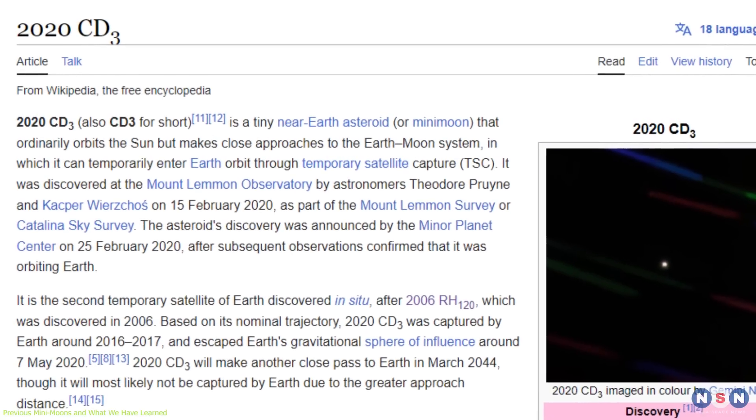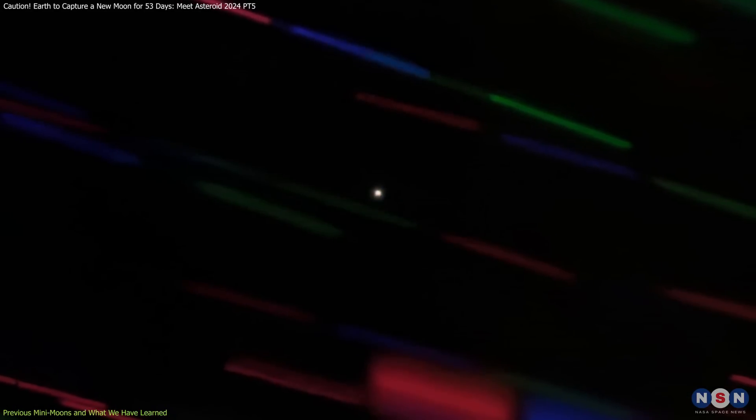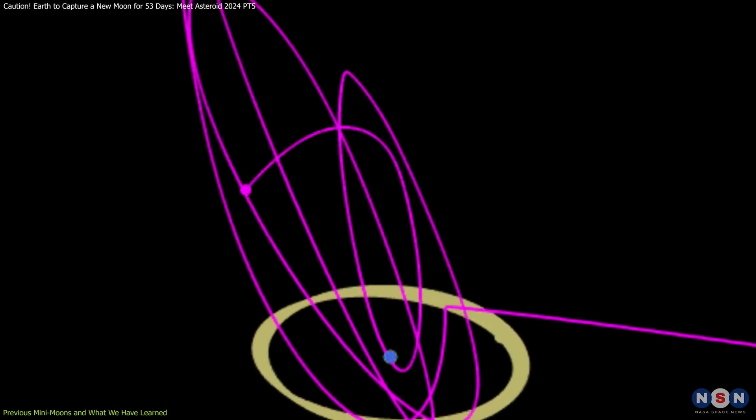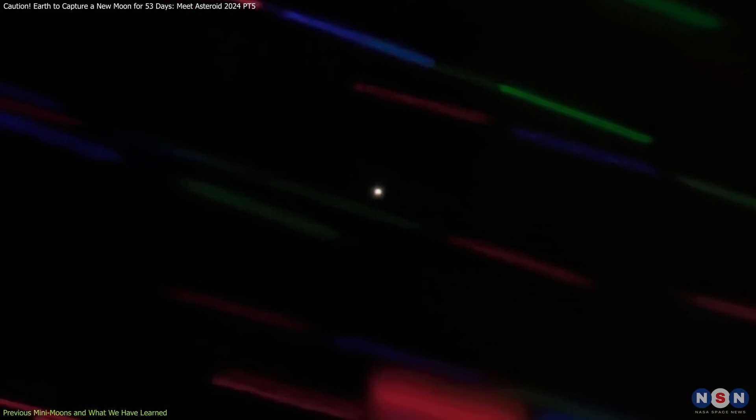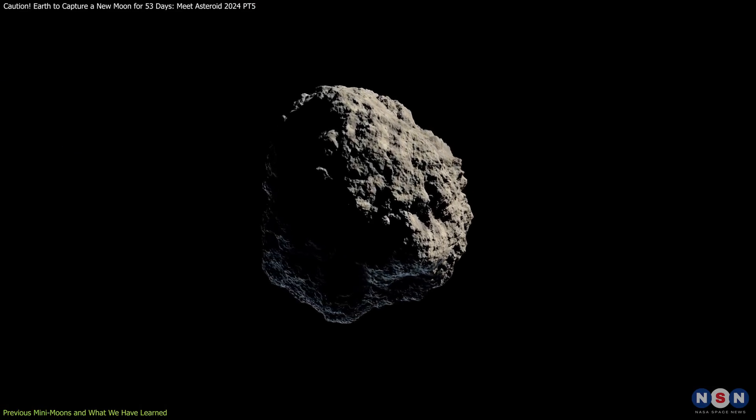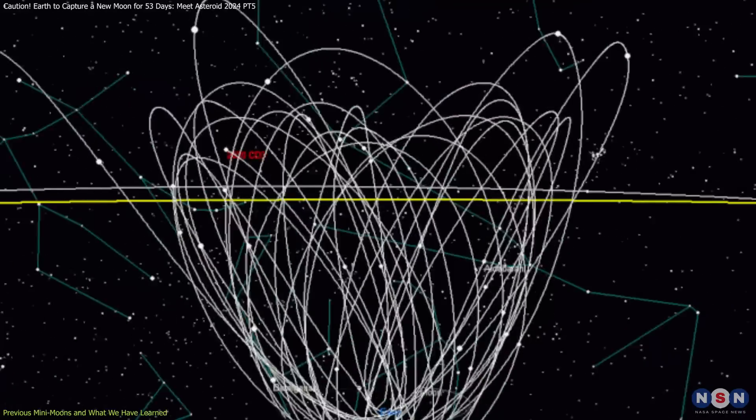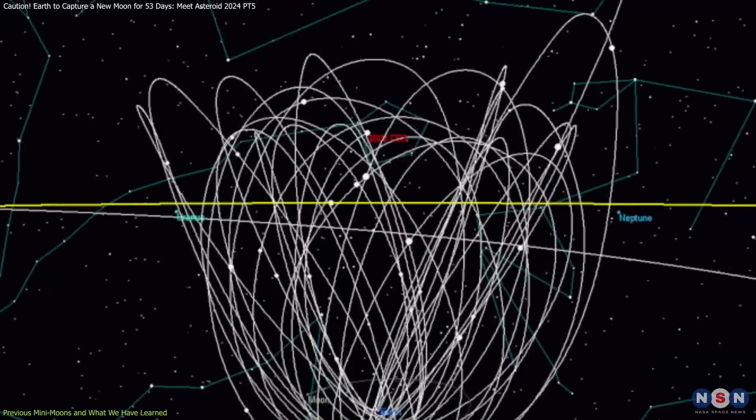Another notable example is 2020 CD3, which was discovered in 2018 and remained in orbit around Earth until 2020. This mini-moon was slightly larger than the 2006 RH120, estimated to be about 1 to 2 meters in diameter. Its capture provided valuable data that helped refine models of how small objects interact with Earth's gravity.